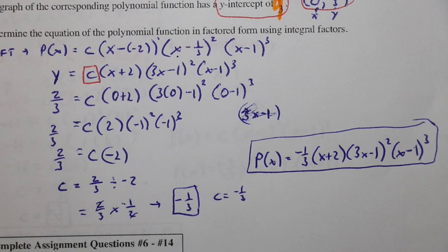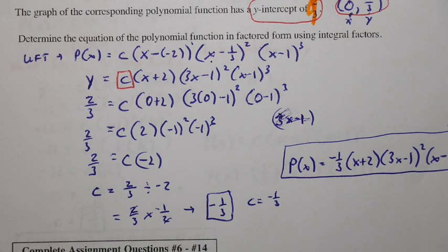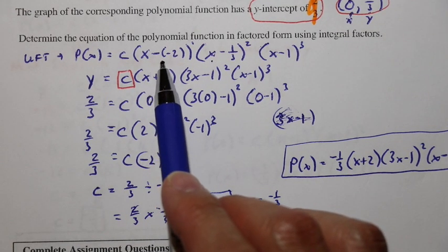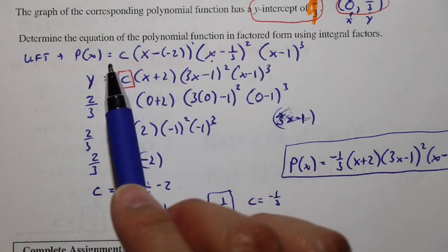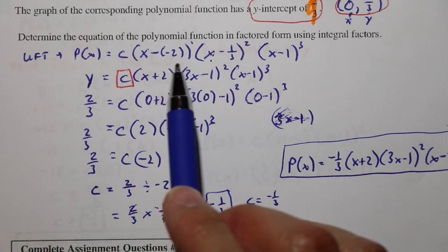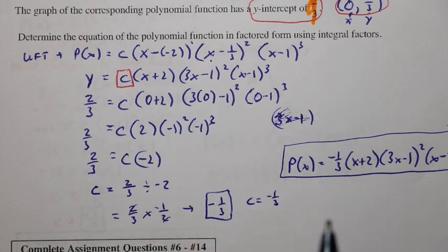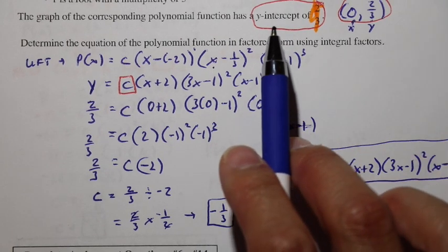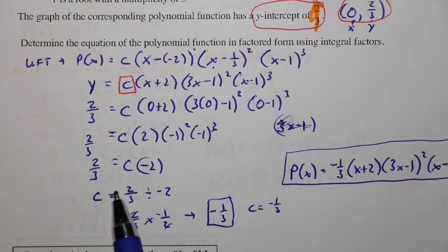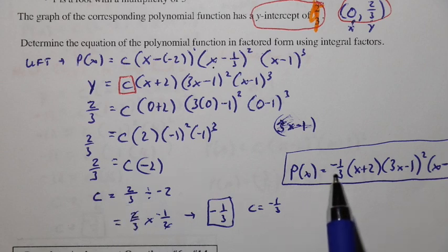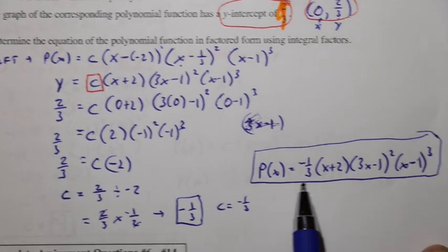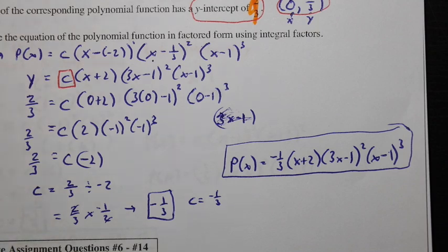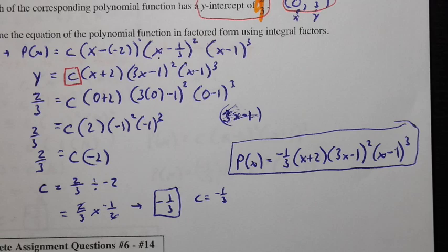To summarize the method: use the zeros to find the factors of the polynomial in factored form. Then find c by using an x, y coordinate — which can be a labeled point, the y-intercept, or another identifiable point. Plug c back into the equation to get the final answer. You are now ready for your assignment — work on that and I will see you in class.